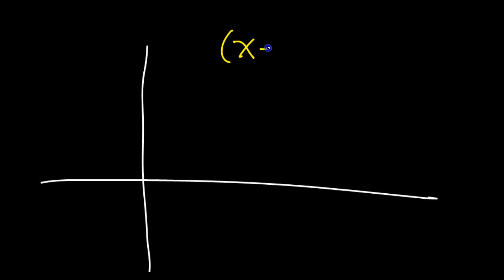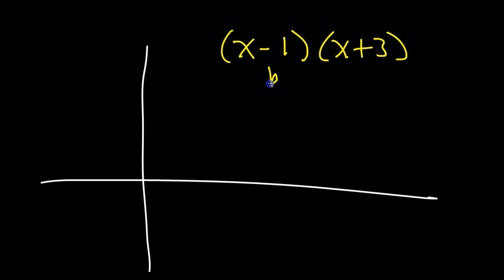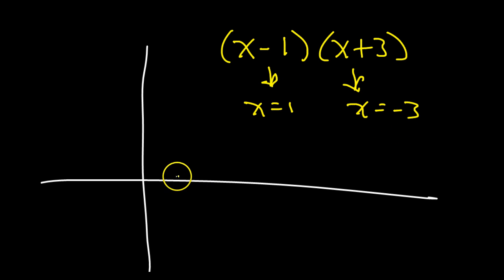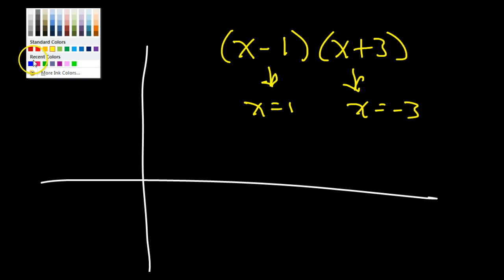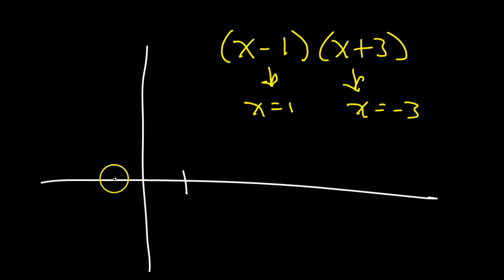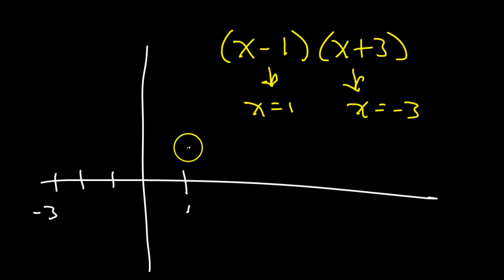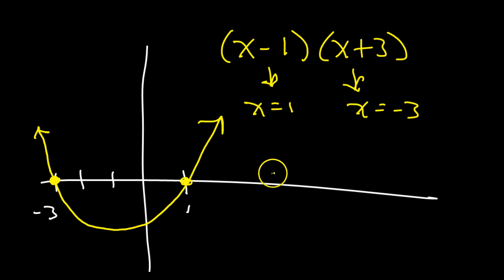If you have a polynomial and it factors down as x minus 1 times x plus 3, then you're going to have two roots: x equals 1, and x equals negative 3. That means you're going to have two x-intercepts, at 1 and at negative 3. This is quadratic, so it's like a parabola, and the sketch would look something like this.